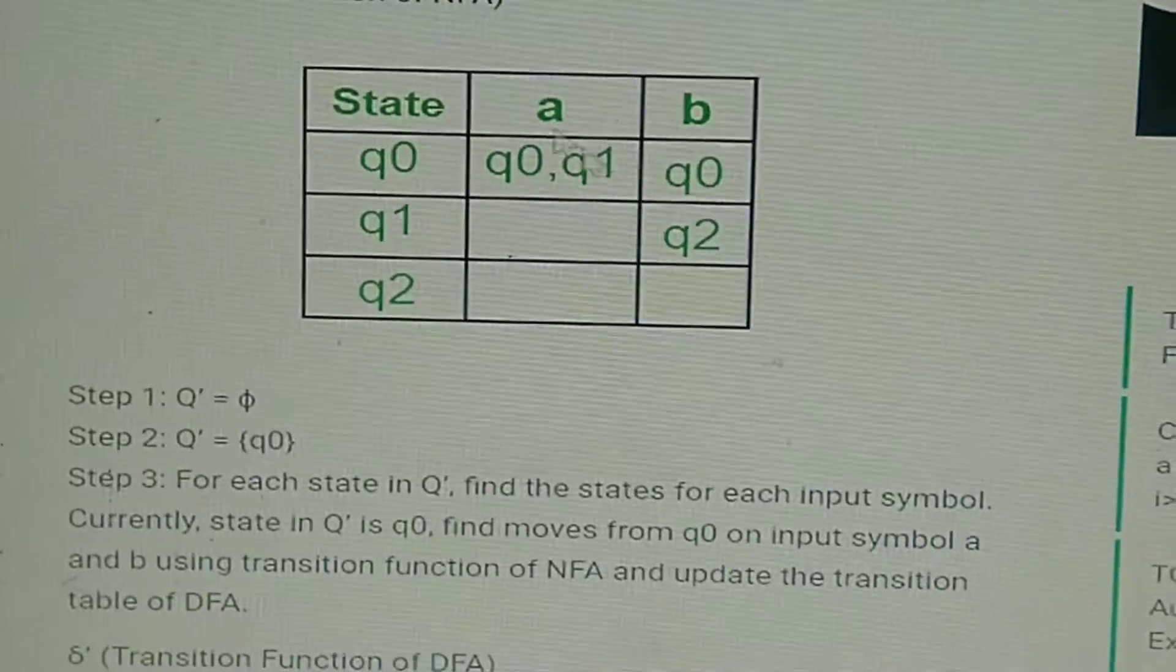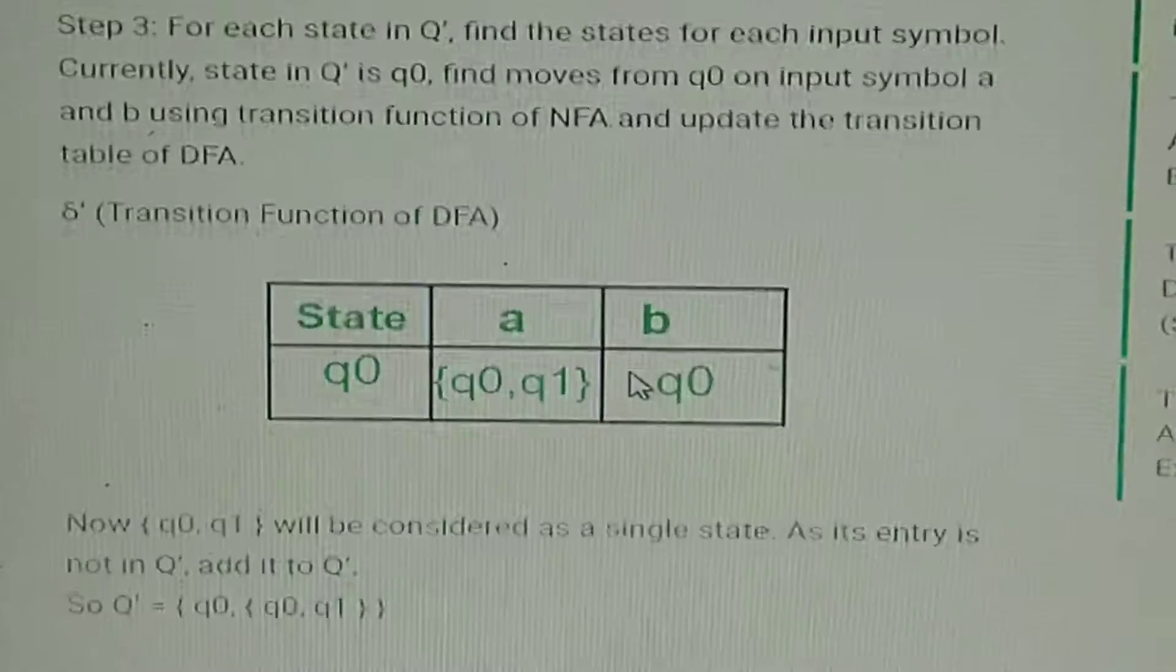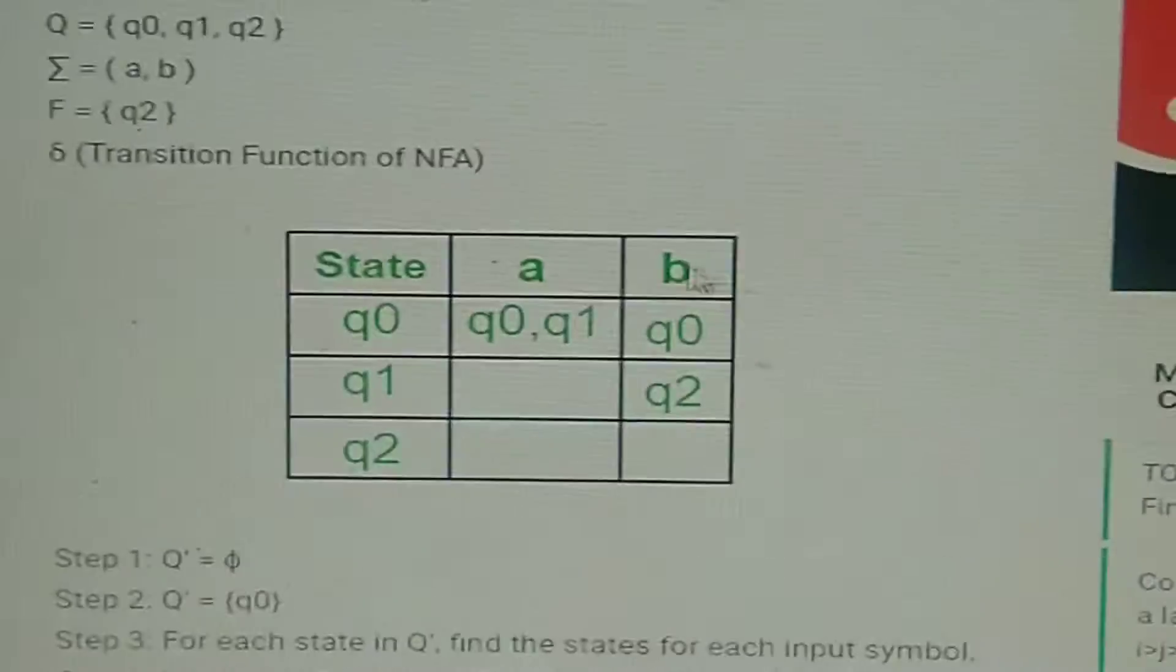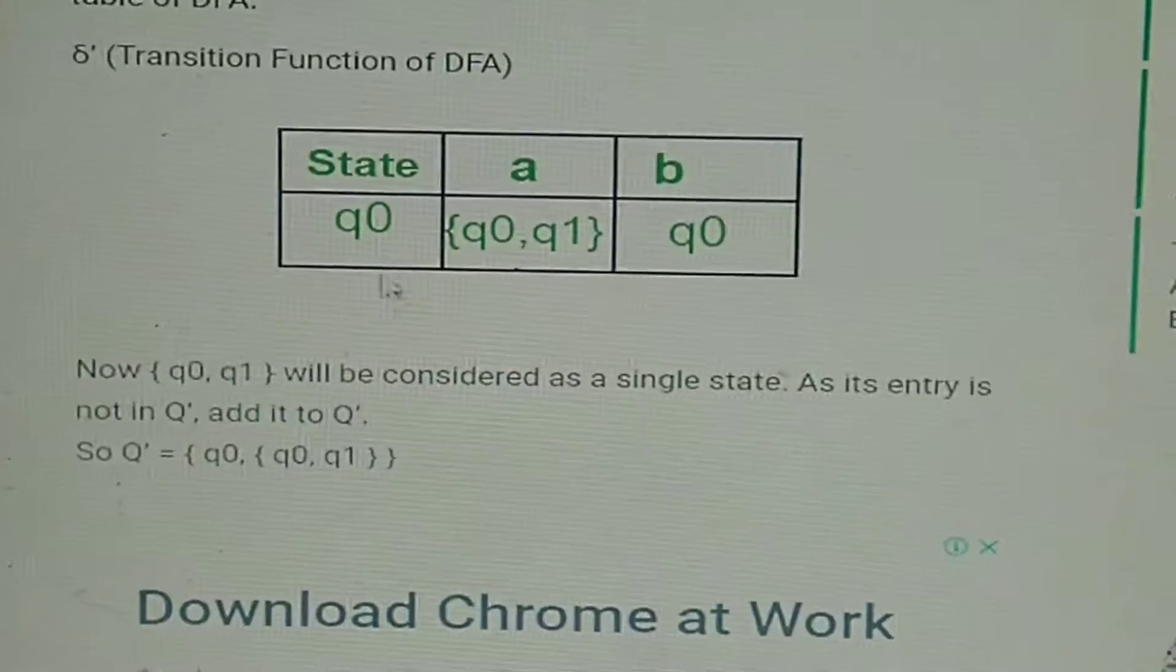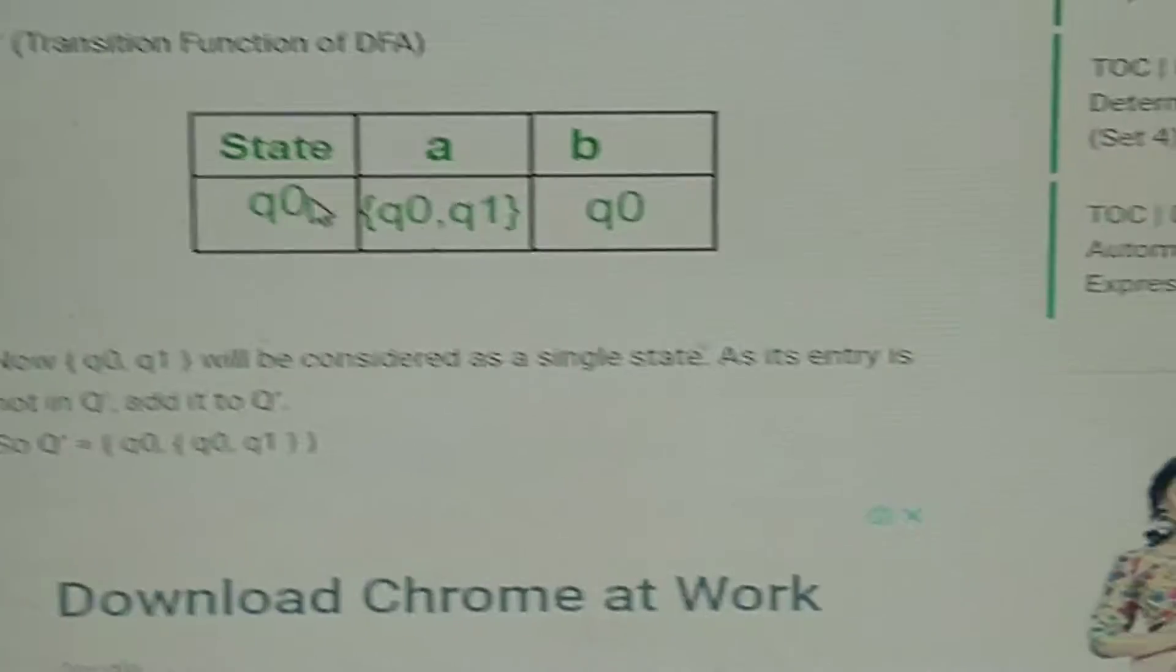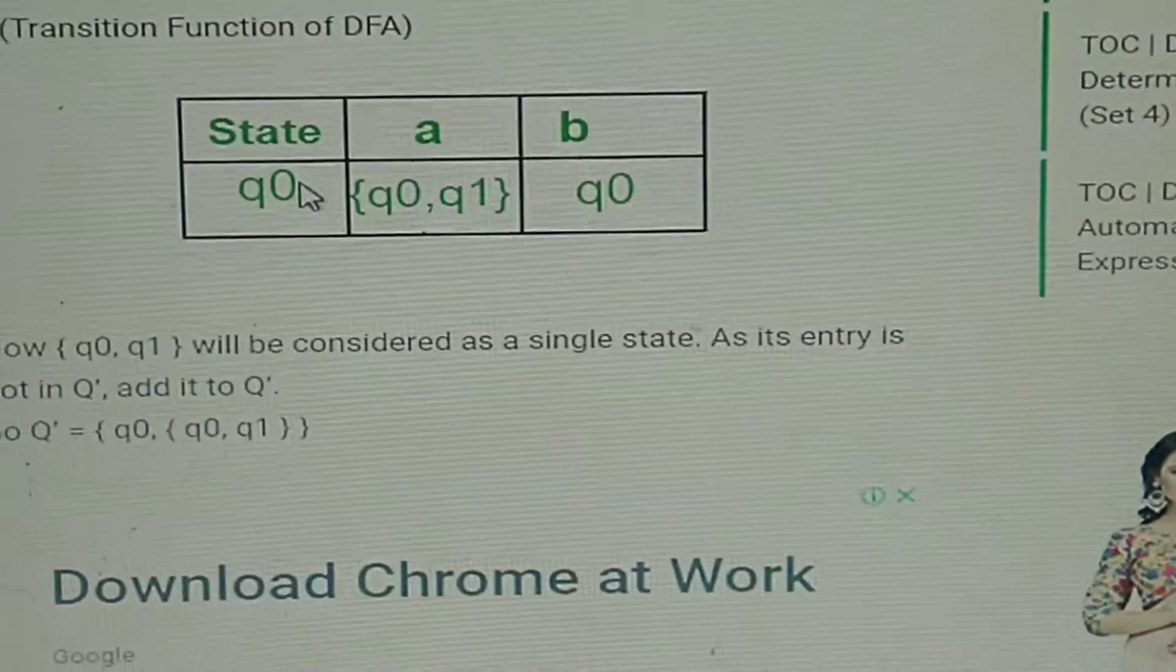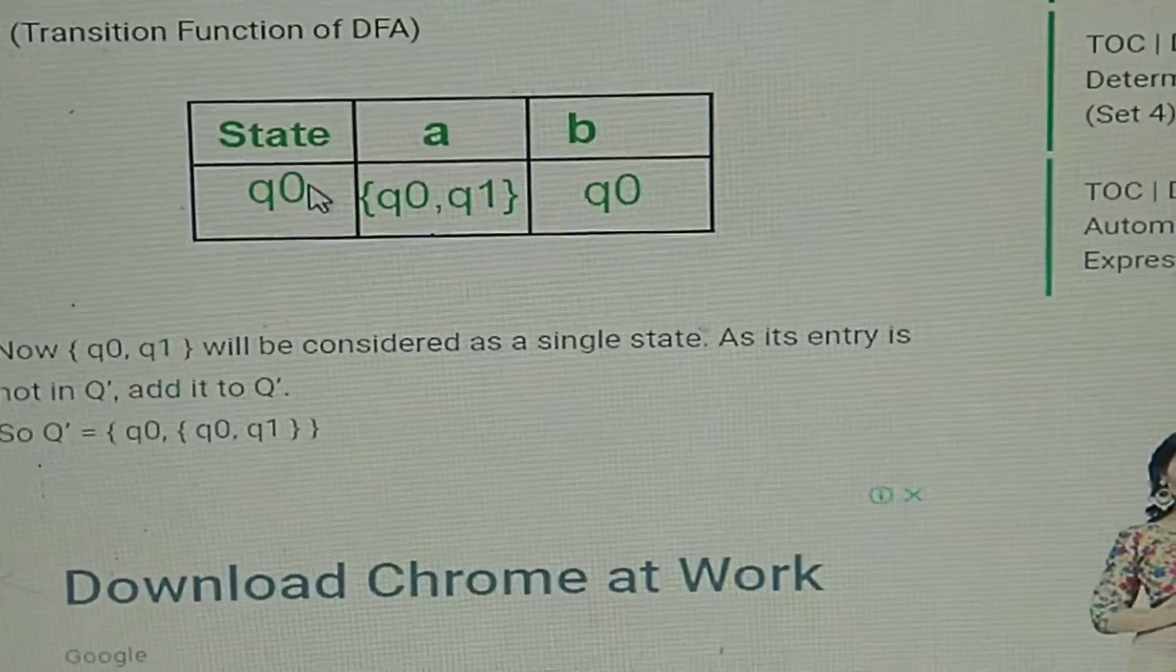I've written it here. On giving 'a' to q0, you can see that it is transiting to q0 and q1, and on giving 'b' to q0, it's transiting to q0.